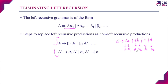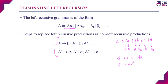To eliminate the left recursion, the first step gives S derives c S-dash or d S-dash, and the second step gives S-dash derives a S-dash or b S-dash or epsilon. This is how we eliminate left recursion from a grammar with more than one alpha production and more than one beta production.